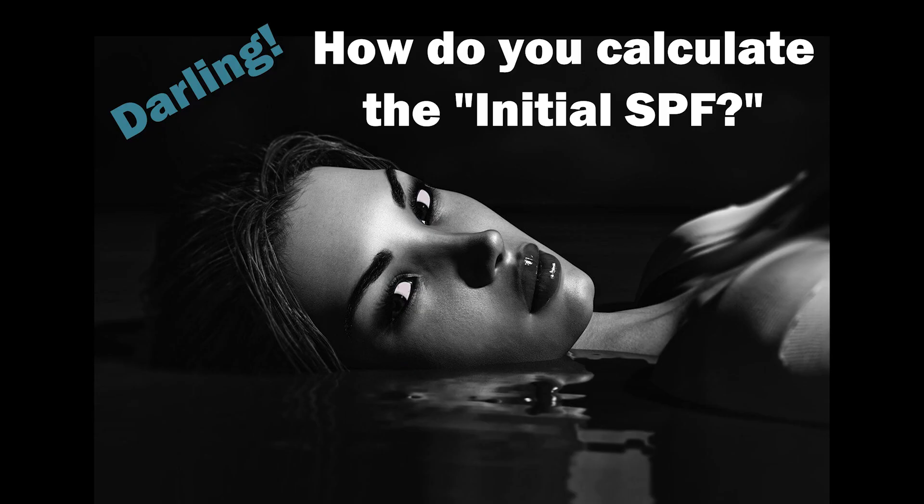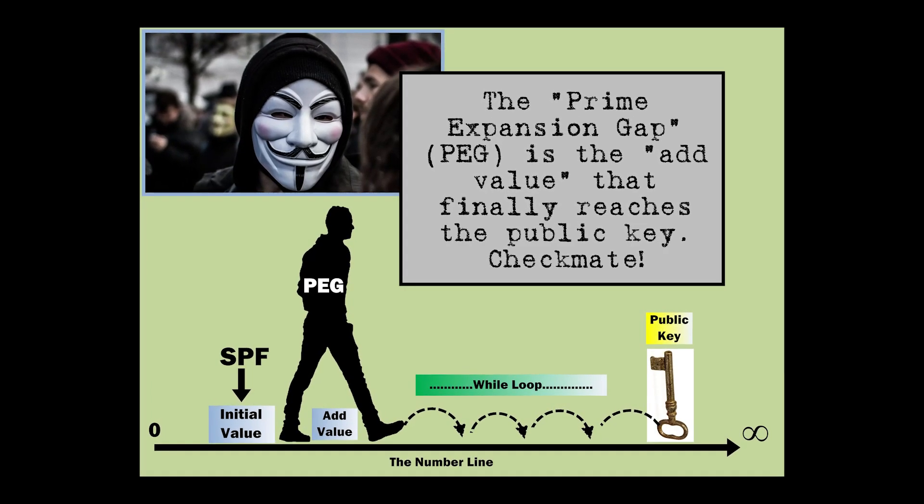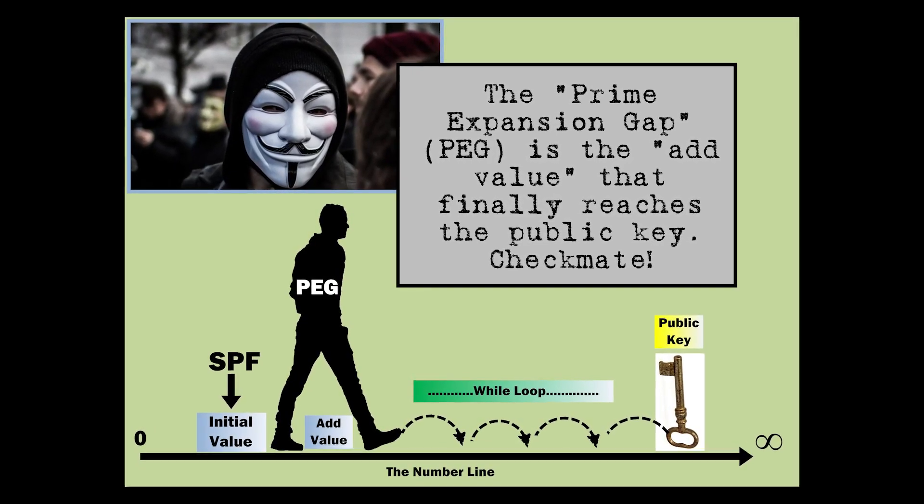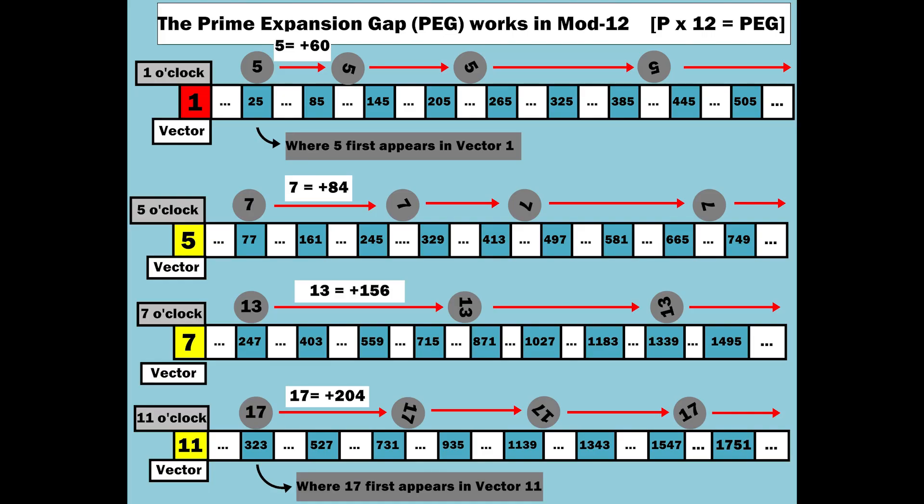Darling, how do you calculate the initial smaller prime factor? You use this chart to relocate your chosen smaller prime factor into the same vector where the public key is situated. You need to keep in mind that the prime expansion gap is the add value that finally reaches the public key. Checkmate. As you can see here, the prime expansion gap works in mod 12. You multiply whatever prime you have by 12 to create the prime expansion gap for that prime.